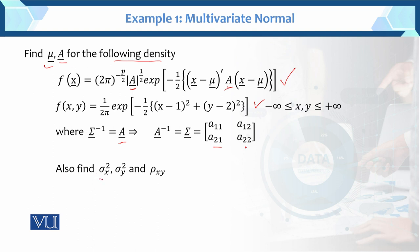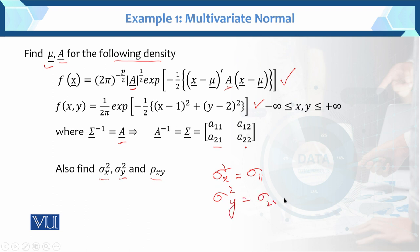We also need to find sigma squared x, sigma squared y, and the correlation of x and y. We can say that sigma squared x equals sigma 11, and sigma squared y equals sigma 22. This is the multivariate normal density function, and we have f(x,y).